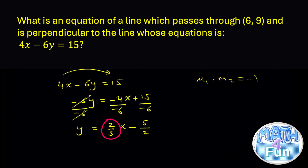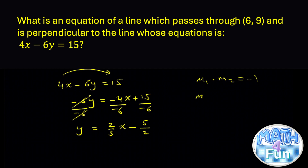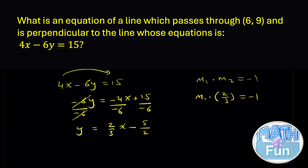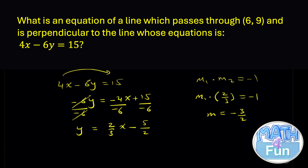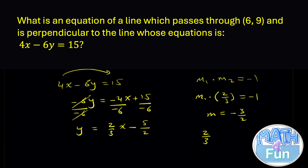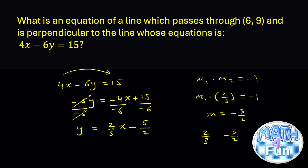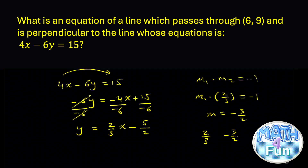We need the slope of the perpendicular line. Using m₁ × (2/3) = -1, divide both sides by 2/3 to get m₁ = -3/2. A faster approach: for perpendicular lines, flip the fraction and change the sign — the opposite reciprocal of 2/3 is -3/2. So the slope of our line is -3/2.